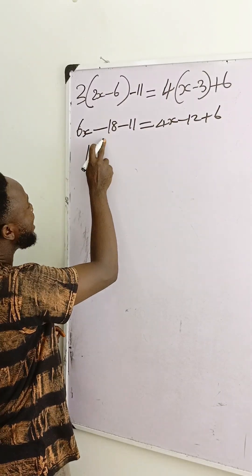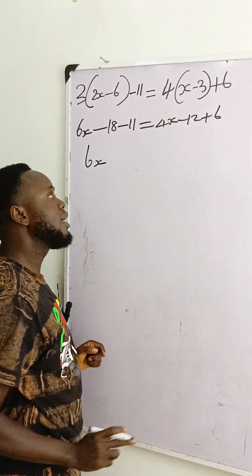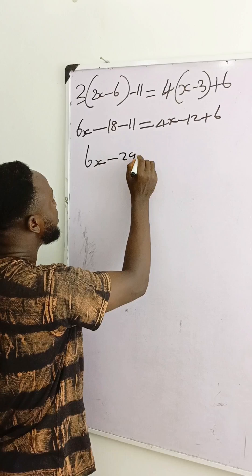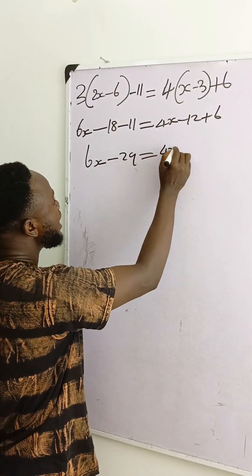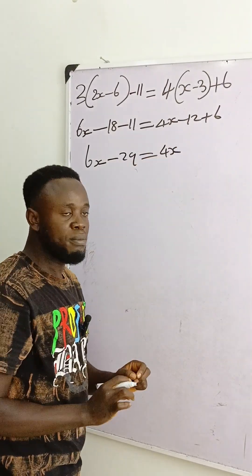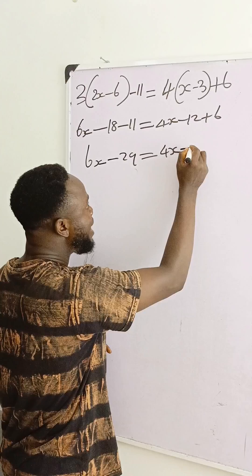Then 6x minus 18 minus 11 is minus 29. This equals 4x minus 12 plus 6, which is minus 6.